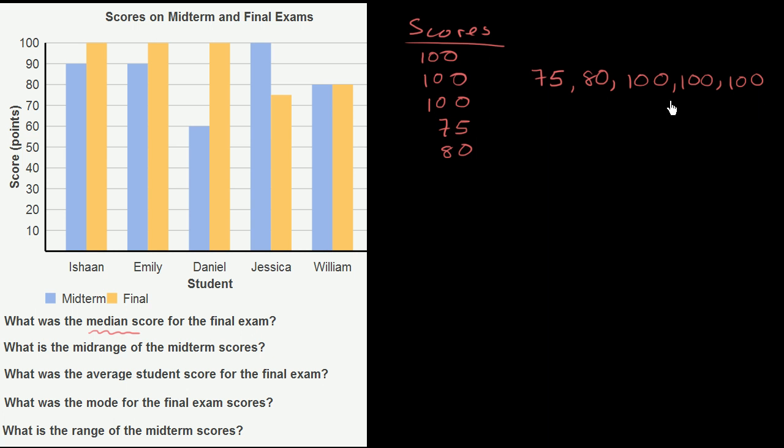There are five scores, so you have one middle value. If you had an even number of scores, you'd take the mean of the two center values. But here, when you order them, it's clear that the center value is 100. So the median score for the final exam is 100, because there are so many hundreds.